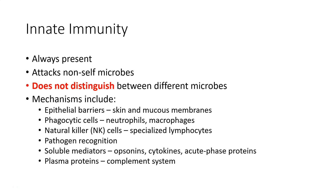Innate immunity is something that is always present — it's ready to go whenever you need it. Innate immunity attacks things that are non-self, ideally microbes. It does not distinguish between the different microbes. Innate immunity only knows: this is me, or this is not me.